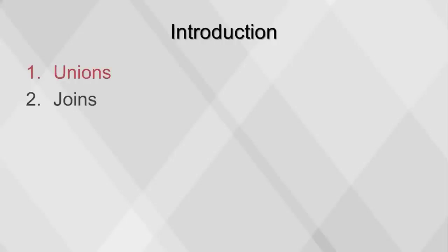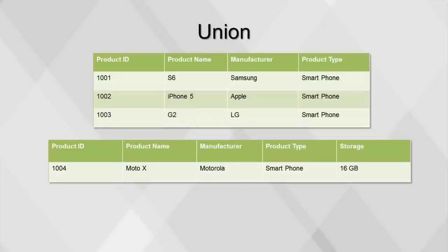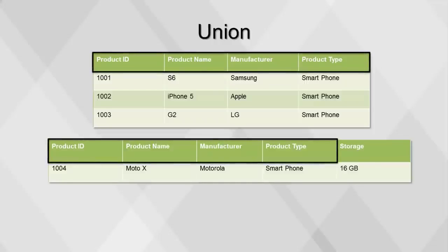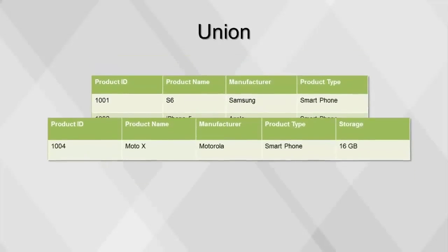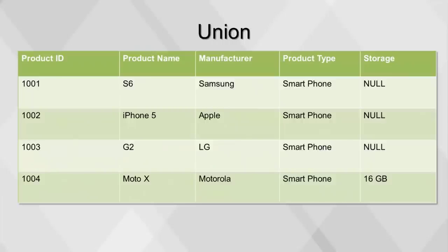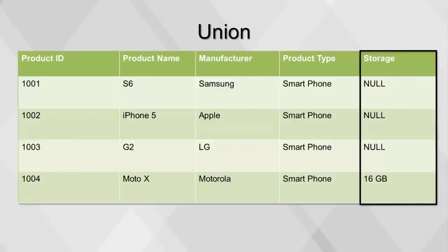This video will cover unions and joins. Union is also referred to as appending, concatenating, or combining two tables vertically, or simply adding rows. The tables should have the same variable names, types, and sizes. Variables that are in only one table will receive null or missing values for the rows from the tables that do not contain them. In this union, our two tables — one with three rows and one with one row — will combine to create one larger table which has four rows. Notice the null values in the storage column, since storage was not contained in both original tables.